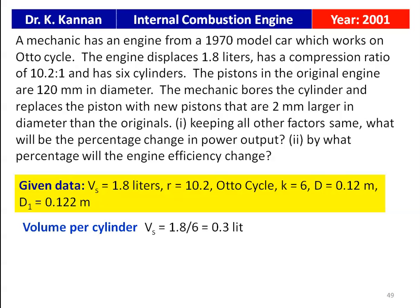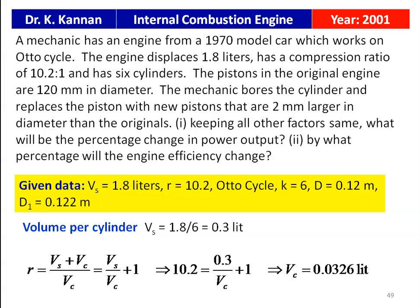Volume per cylinder: the total swept volume is 1.8 liters for the 6-cylinder engine, so volume per cylinder equals 1.8 divided by 6 equals 0.3 liters. The compression ratio equals (Vs + Vc) / Vc, which equals Vs/Vc + 1. With r = 10.2: 10.2 = 0.3/Vc + 1, giving clearance volume Vc equals 0.0326 liters.